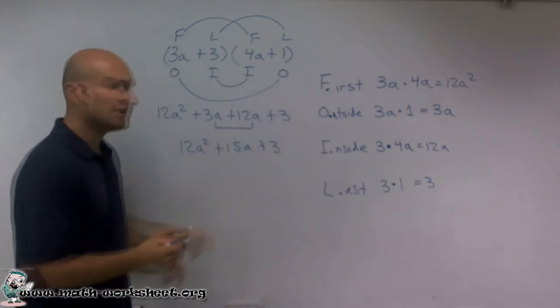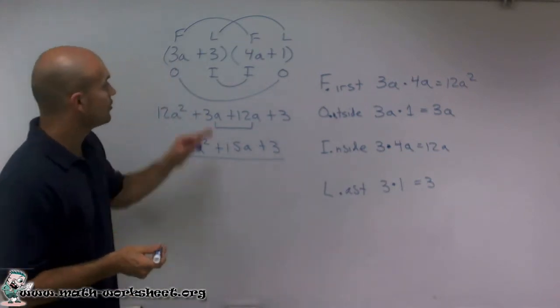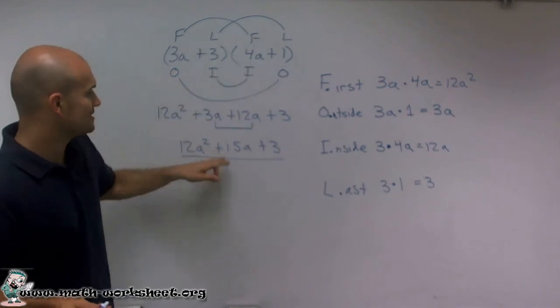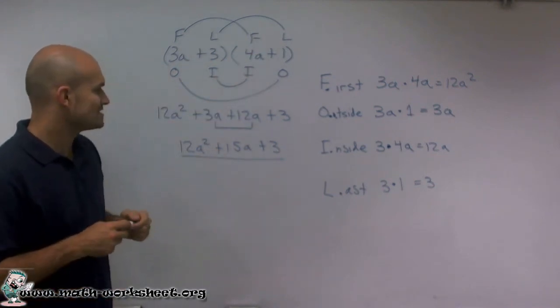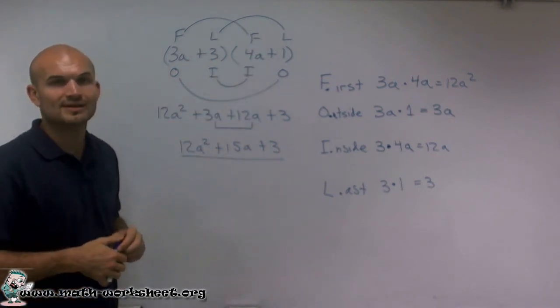And now, my product, or the product of these two binomials, has now produced 12a squared plus 15a plus 3. There you go. Thanks.